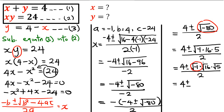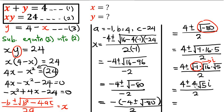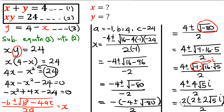The square root of minus 1 is referred to as i. So the value of x becomes 4 plus or minus 4 root 5 i, all over 2. We can factor out 2 from the numerator — 2 is common to both 4 and 4 — giving us 2 times (2 plus or minus 2 root 5 i), over 2. The 2s cancel, so the value of x is 2 plus or minus 2 root 5 i.